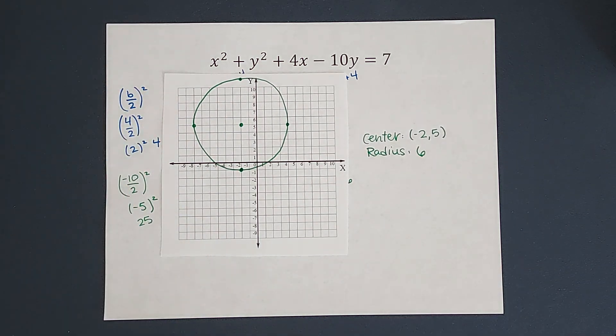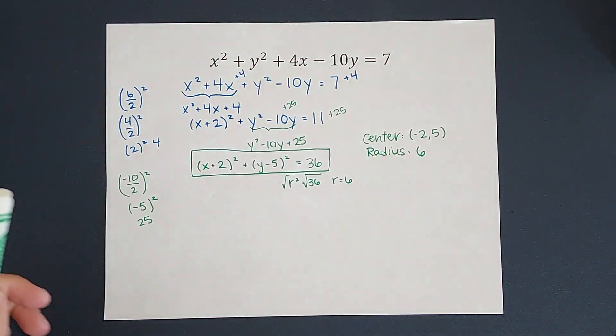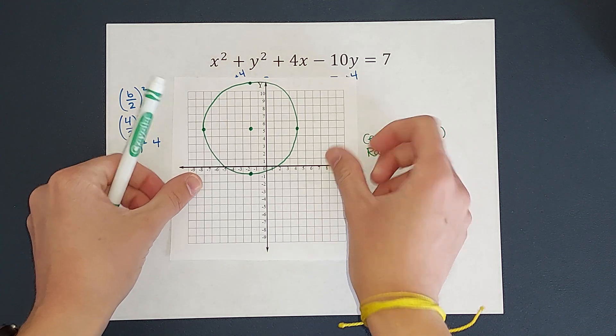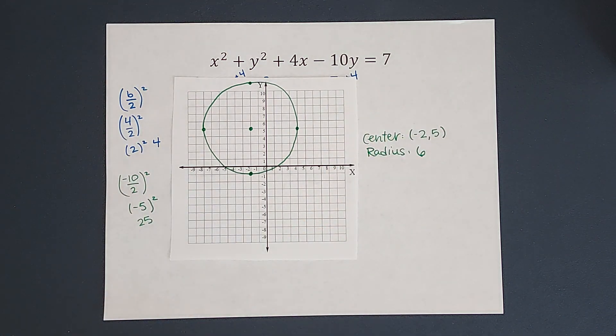All right, hopefully this made sense. We weren't in standard form when we started. We used completing the square to get to standard form, and then we were able to graph it. If you need any other graphing circle videos, I will link a playlist for you, but hopefully this made sense. Thanks, bye.